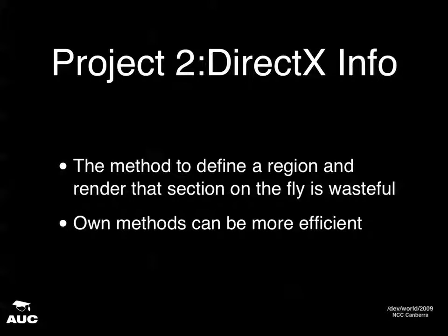The sprite class method to perform this is actually wasteful. When you do a draw call in DirectX with the sprite image, you're pumping in the texture location and region, which is sent from memory to the GPU where the sprite is stored. This can bottleneck speed — all that information is sent, a region has to be defined, the image extracted, then loaded onto screen. There are more efficient methods if you're building a high-performance 2D game.